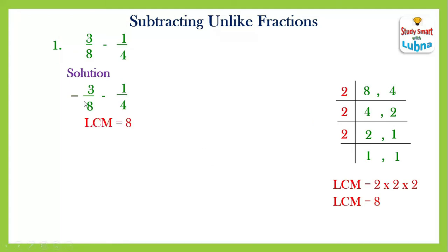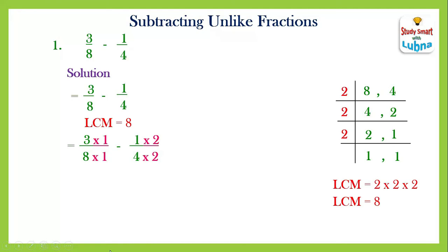The LCM of the denominators eight and four is eight. The next step is to make both denominators equal to the LCM, which is eight. In the first fraction we already have denominator eight, so we multiply it by one in both numerator and denominator. Then we put the minus sign. For the second fraction, we need to make the denominator four equal to eight, so we multiply four by two, and similarly multiply the numerator by two.